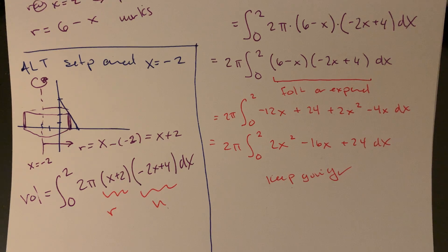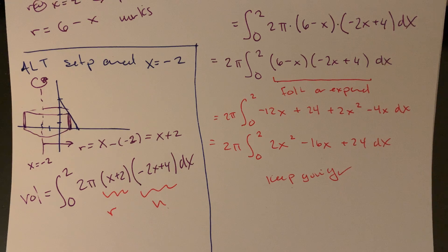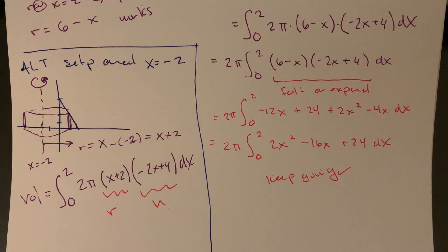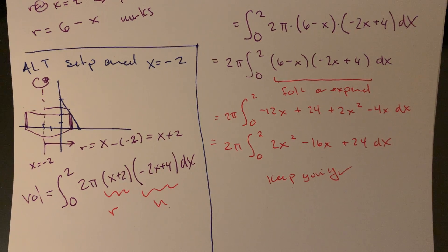That's the basics of Section 6.4. Having shells along with discs and washers, once you know all these methods together, you can pick and choose which one to use in a given situation. As the saying goes, if the only tool you have is a hammer, everything looks like a nail. Now that we know discs, washers, and shells, we can use a little more finesse and pick the right tool for the job.